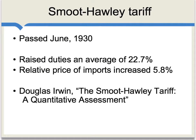Just for background, the Smoot-Hawley Tariff passed in June of 1930. It raised duties an average of about 22.7%. Due to the Smoot-Hawley Tariff, the relative price of imports increased about 5.8%. You'll note this is a problem of tax incidence — the amount by which prices change will not be exactly the same as the amount by which tariffs change.